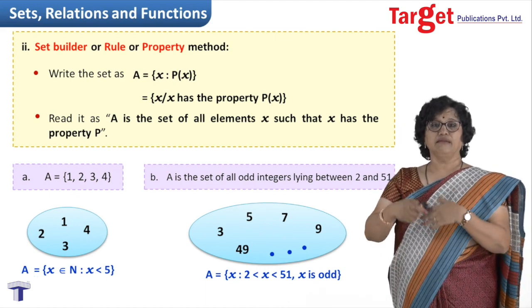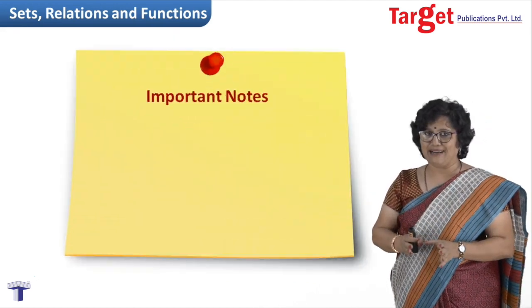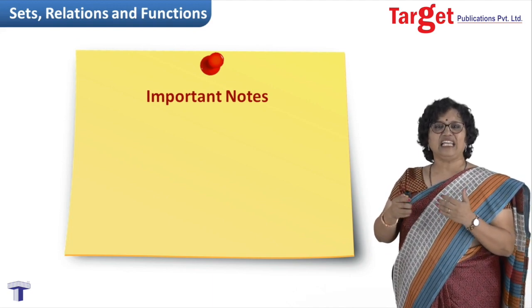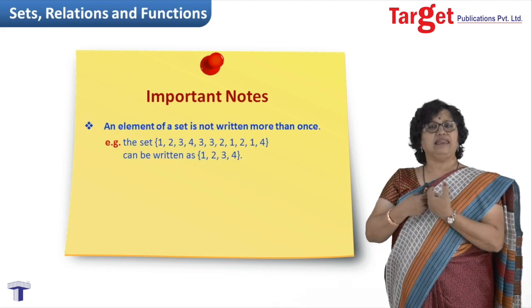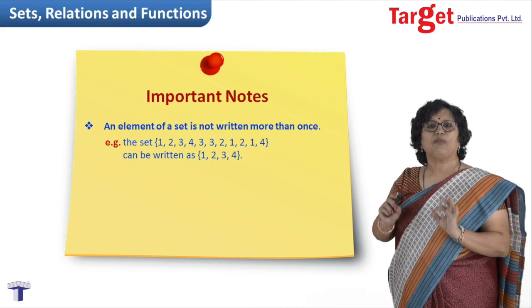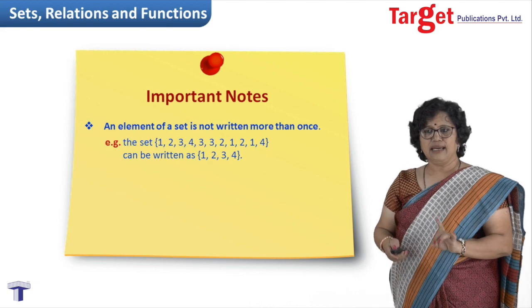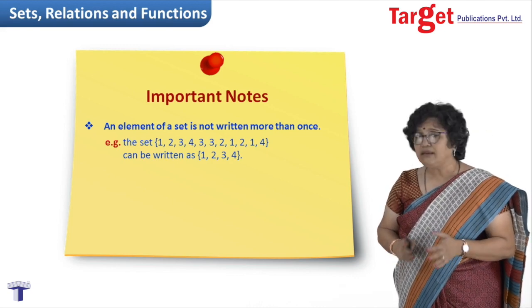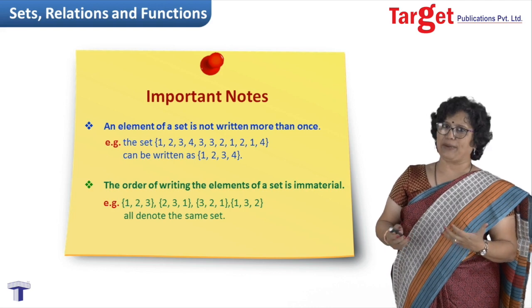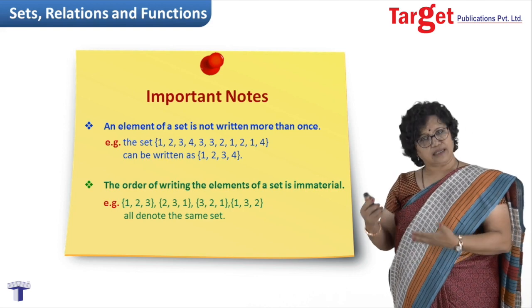So this is how we represent a set. Now you realize one thing - in these examples or presentations, I have taken certain care that I have not written any element more than once. So even if you have n number of 2's or 3's or 1's, we actually write them once only. So I will write 1, 2, 3, 4, even if 4 has appeared 5 times and 3 has appeared 3 times, we will be writing only once. And the second care we take is that the order in which numbers appear is not important. So understand that if you take this much care, then you should be in a position to represent sets easily. When we come in the next session, we will be taking more types of sets and other things related to sets.